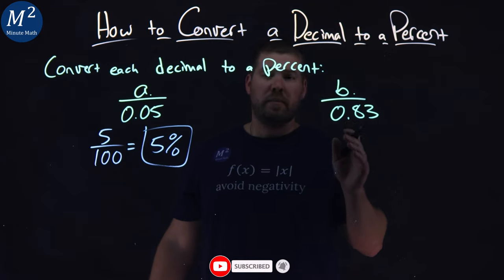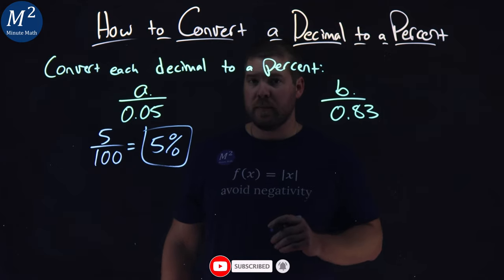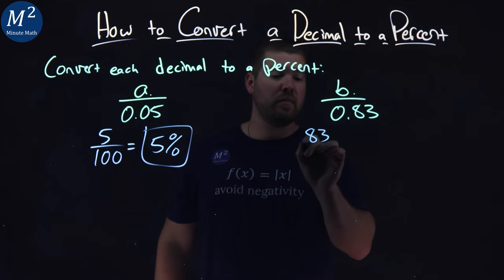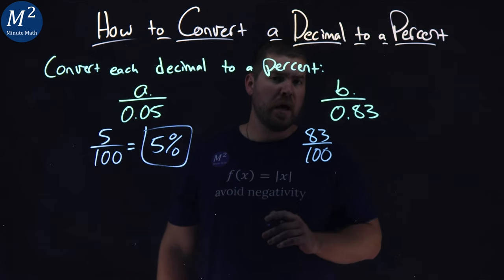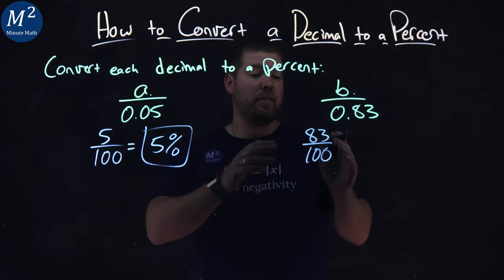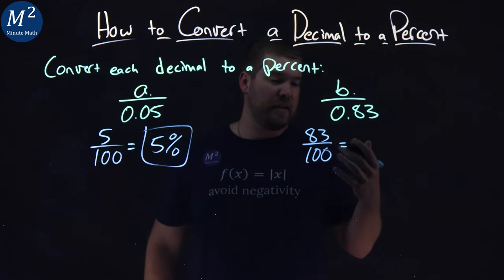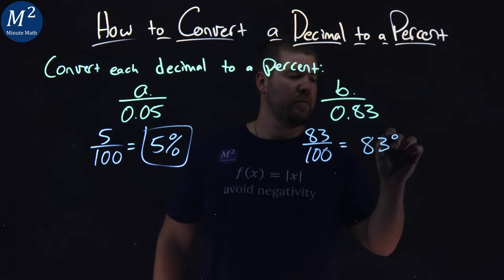Same process now for part B, 0.83. Let's write that as a fraction. 0.83 is the same thing as 83 over 100. And with our rules with fractions, if we're divided by 100, we just take the numerator and that becomes the percent value. 83%.